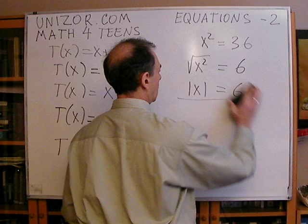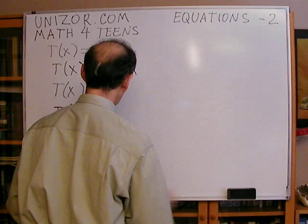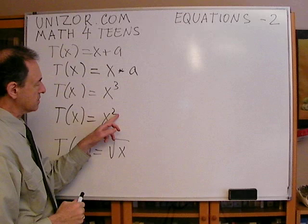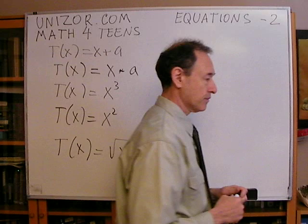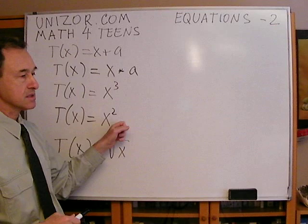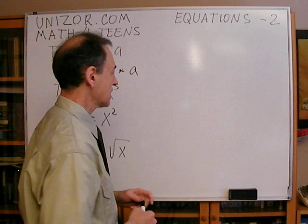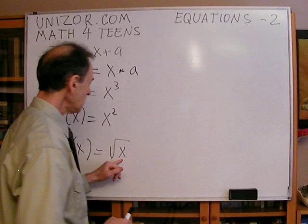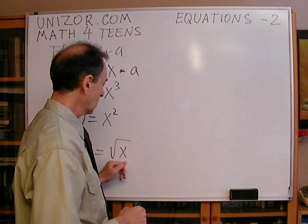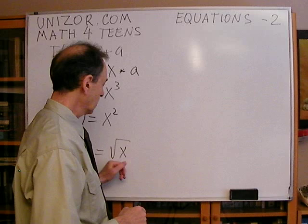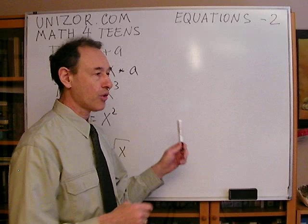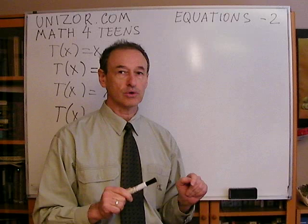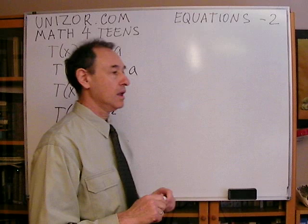Any transformation involving even powers — like x to the fourth, x to the sixth, etc. — will have the same property of not being invariant transformations, because the even power means you can have two different values mapping to the same result. The same applies to even-numbered roots: square root, fourth root, sixth root, etc., all have the same property as square root, and we must always consider the arithmetic — non-negative — value of that root.